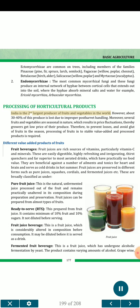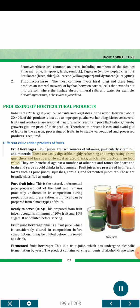Processing of Horticultural Products: India is the second largest producer of fruits and vegetables in the world. However, about 30 to 40% of this produce is lost due to improper post-harvest handling. Several fruits and vegetables are seasonal in nature, which results in price fluctuations, thereby growers get low prices for their produce. Therefore, to prevent losses and avoid glut of fruits in the season, processing of fruits into stable, value-added and processed products is required. Different value-added products of fruits include fruit beverages. Fruit juices are rich sources of vitamins, particularly vitamin C and minerals. They are easily digestible, highly refreshing and thirst-quenching, far superior to most aerated drinks which have practically no food value. Fruit juices are broadly classified as pure fruit juice, ready-to-serve (RTS), fruit juice beverage, fermented fruit beverage, squash, cordial, sherbet or syrup, fruit juice concentrate, and fruit juice powder.